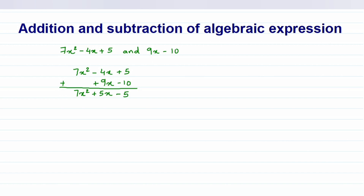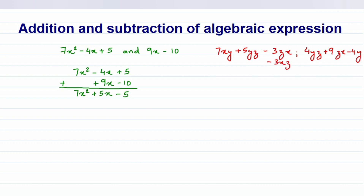Now I'm going to give you one more example where we have to add three expressions instead of two. The first expression is 7xy plus 5yz minus 3zx. The second one is 4yz plus 9zx minus 4y. And the third expression is minus 3xz plus 5x minus 2xy. So we have three expressions.